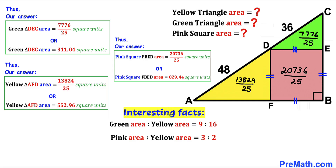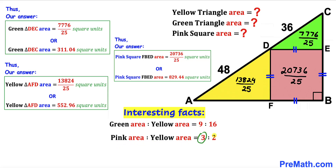Some interesting facts: the ratio of green area to yellow area is 9:16, and the ratio of pink area to yellow area is 3:2. Thanks for watching — please don't forget to subscribe to my channel for more exciting videos. Bye!